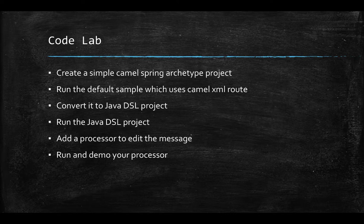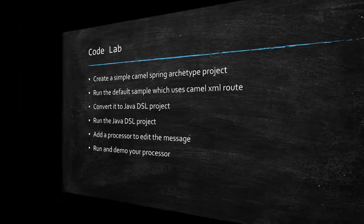Once we have converted the XML to Java DSL, we are going to add our very first processor to edit a message, to log if you want to do any sort of logging or processing, and we are going to run the demo processor one more time.